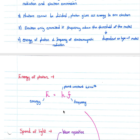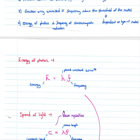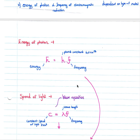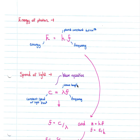When we look at the energy of a photon, we have the formula E equals H — Planck's constant, which is 6.6 times 10 to the negative 34 — times F, which is the frequency of our light.